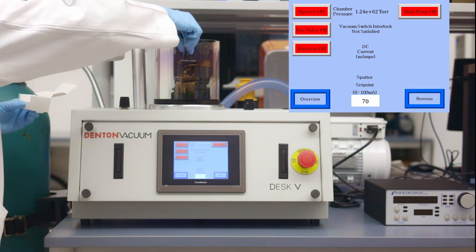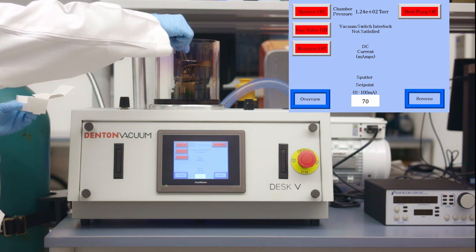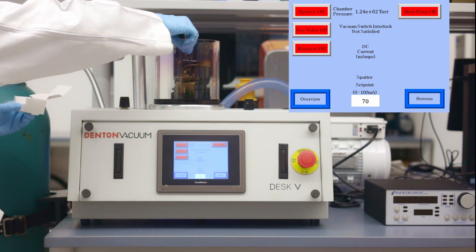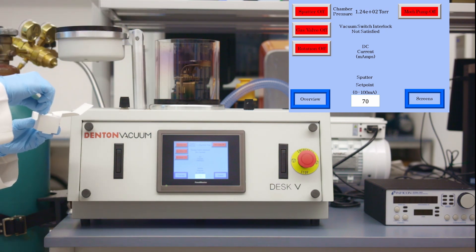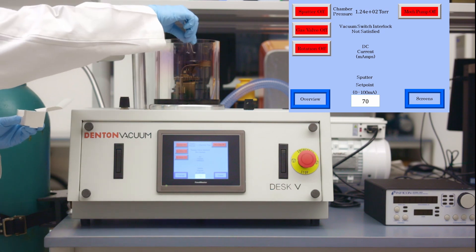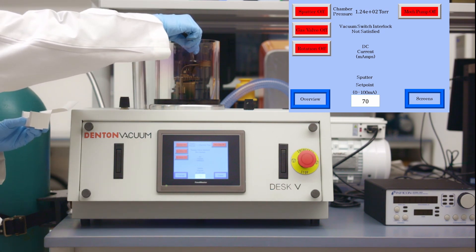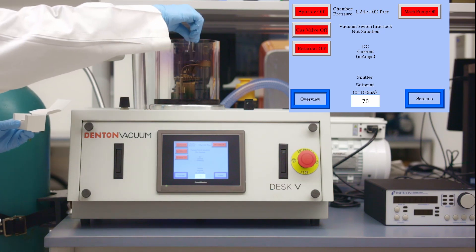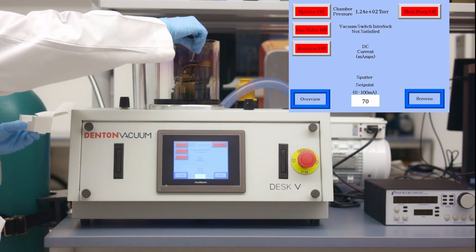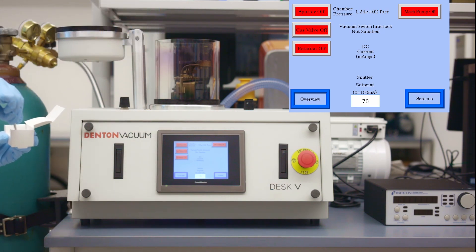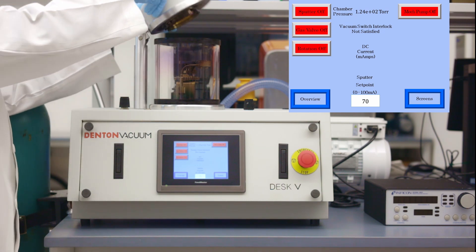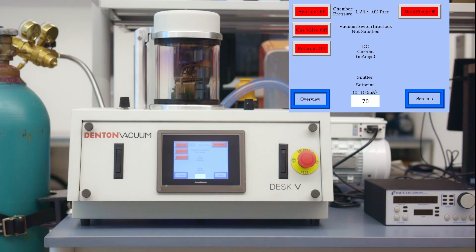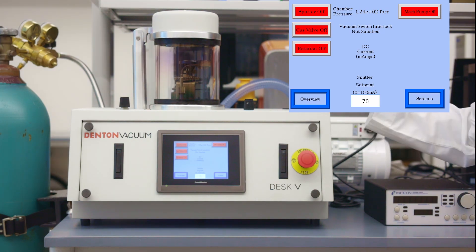Carefully remove the samples and store them in the box. Replace the lid on the glass jar and turn off the sputter coater by toggling the power switch on the back of the sputter coater.